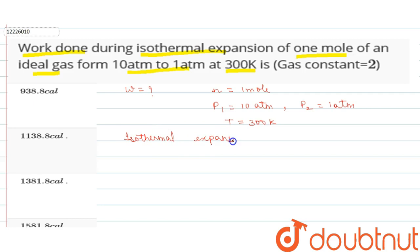Work done formula for isothermal process: work done is equal to minus nRT ln V2 by V1.